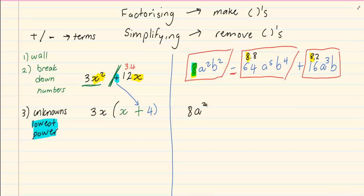If you look at b, we have got b squared in the first term, b to the power 4 in the second term and b in the third term. So we are going to take out a b.